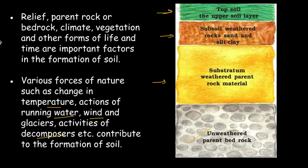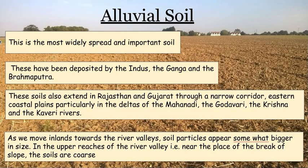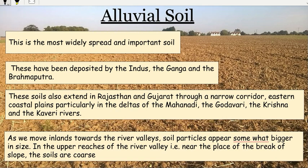Soil formation is caused by temperature, water, wind, and decomposers. Now let us come to the interesting part — the types of soil. We are going to study six types of soils: alluvial soil, black soil, red and yellow soil, laterite soil, arid soil, and forest soil.